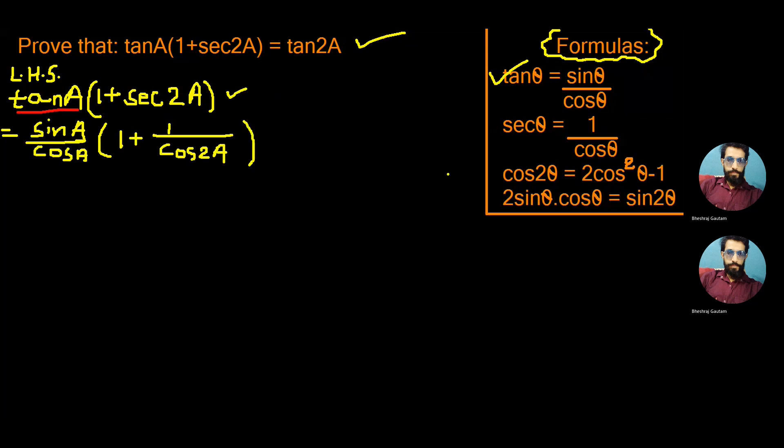From the formula sec θ is equal to 1 by cos θ. Now solving the bracket taking LCM, we get cos² A as LCM in denominator. So we write sin A by cos A bracket LCM as cos² A.